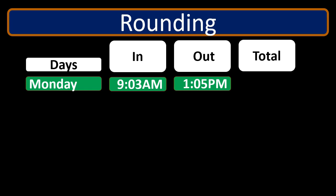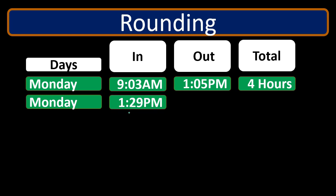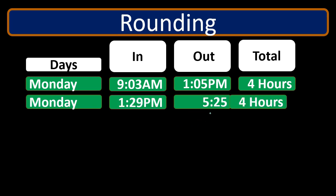Whether it's a digital time clock or an online check-in system, the timestamps won't fall exactly on the hour. If someone punches in at 9:03 a.m. and out at 1:05 p.m., we typically round to the nearest 15-minute interval for clean payroll calculations. So that rounds to about 9:00 to 1:00, giving four hours. Returning from lunch at 1:29 and leaving at 5:25 rounds to 1:30 to 5:30, giving another four hours.